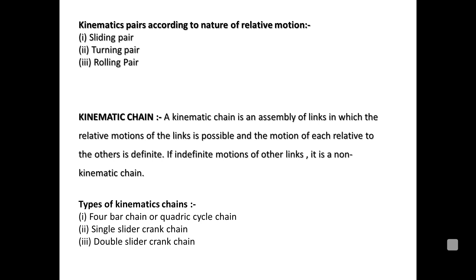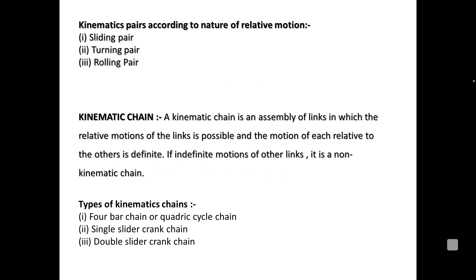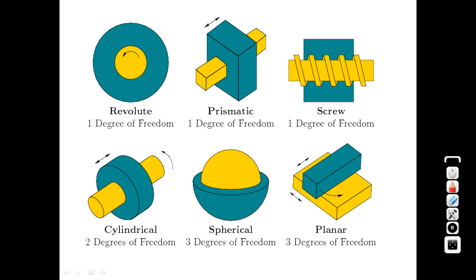A kinematic chain alone does not transmit motion in real machines — we require mechanisms for that. Types of kinematic chains include the 4-bar chain, the single slider crank, and the double slider crank. We will be discussing the 4-bar and single slider crank mechanisms in detail.